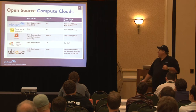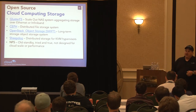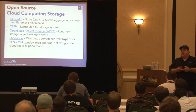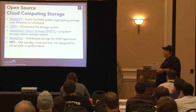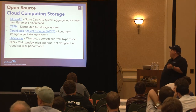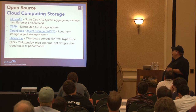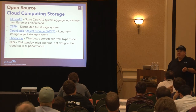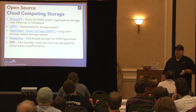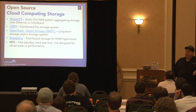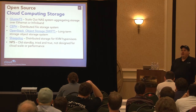Those are the compute clouds and hypervisors. Now you've got to store your images somewhere. One of the most debated topics is how you do storage for compute clouds. The projects most interesting for distributed storage are GlusterFS — a scale-out NAS system that aggregates storage over Ethernet or InfiniBand — and Ceph, a distributed file system developed by DreamHost. I like the fact that DreamHost is a user of distributed storage solving their own problem, not just trying to sell software, so their input is valuable in the evolution of storage systems.